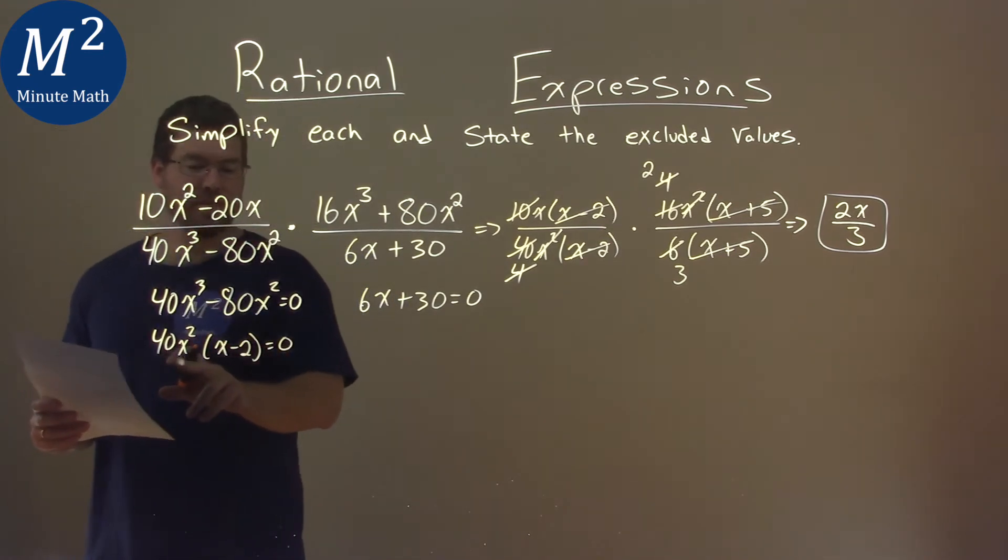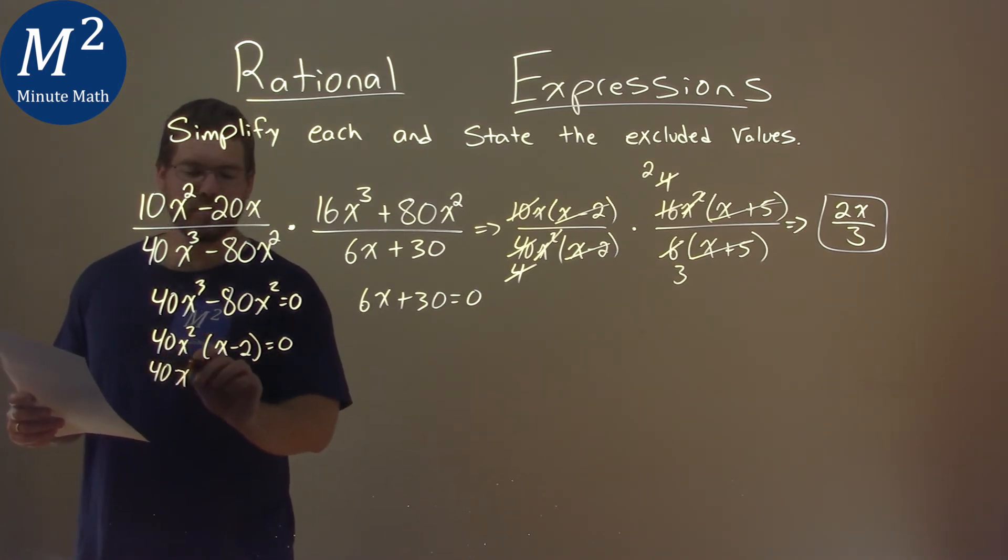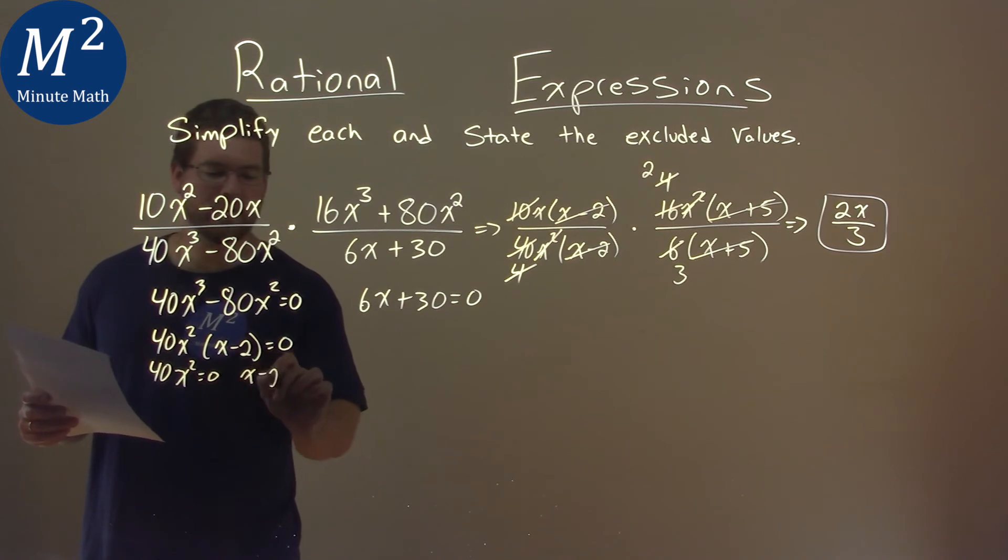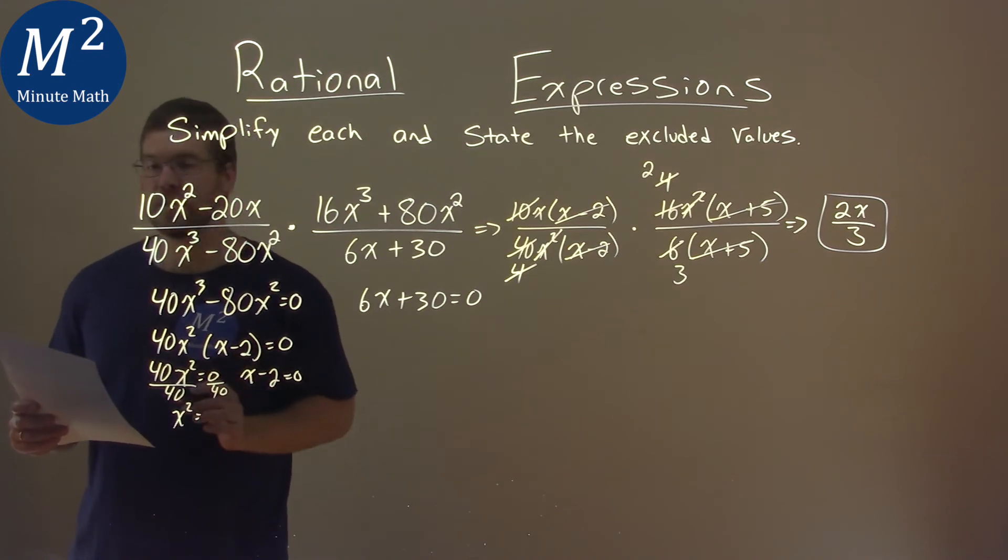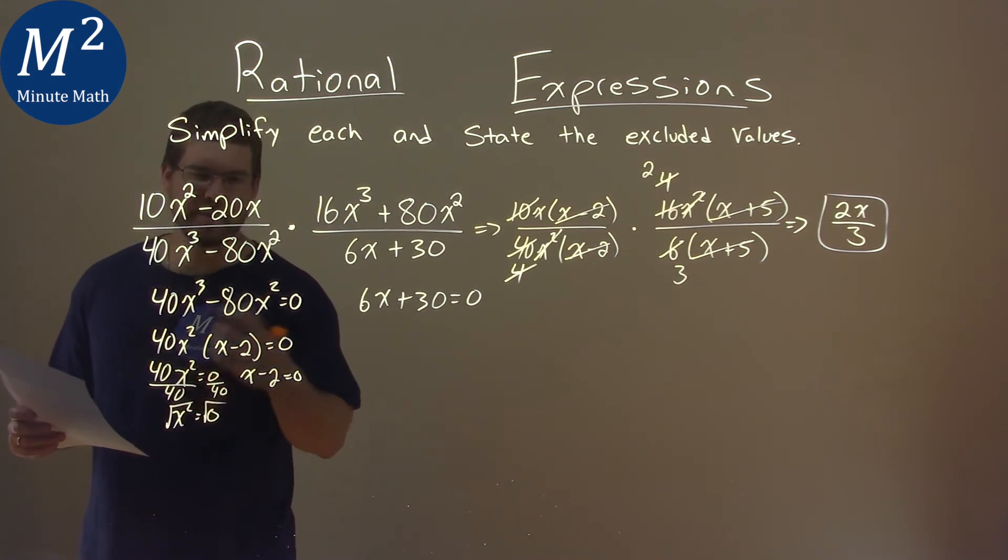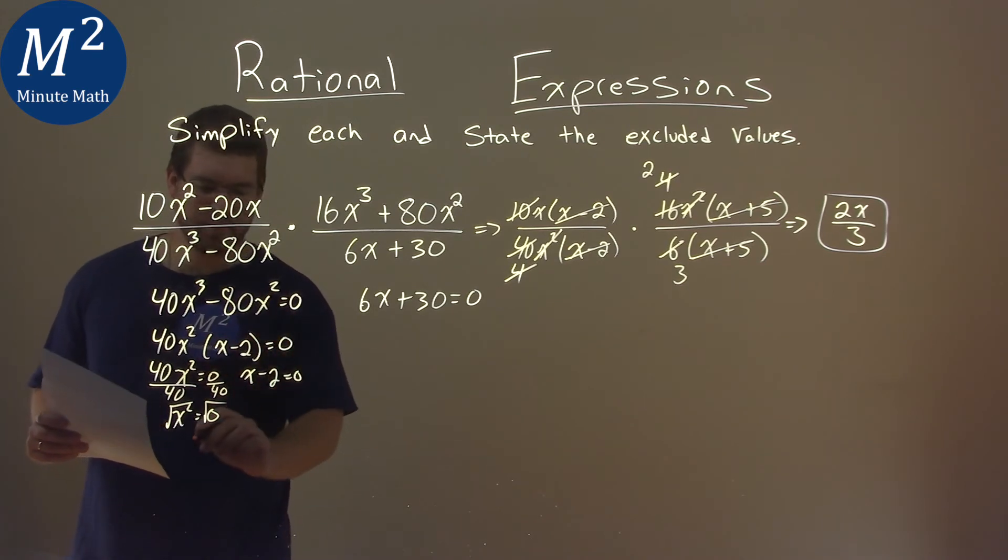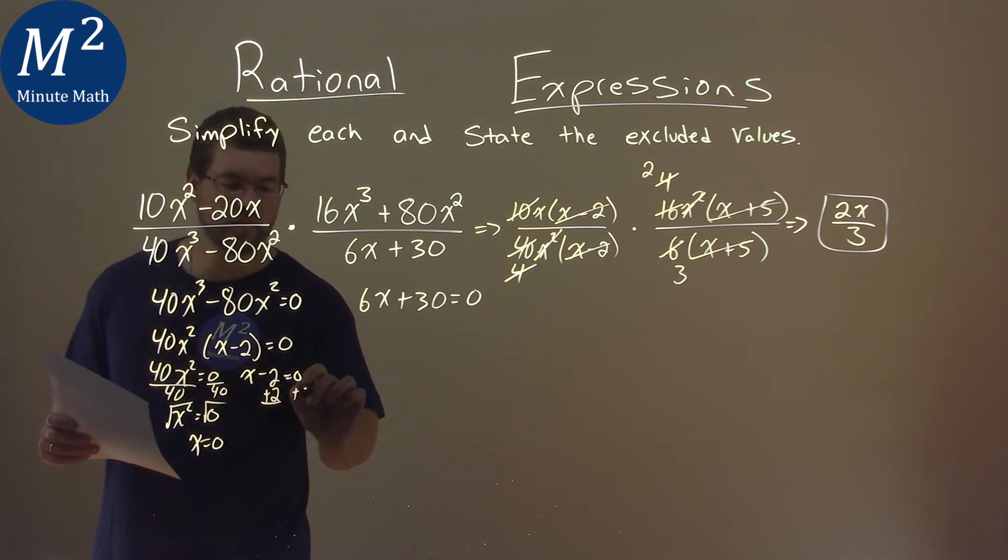Well, with that, we're going to set now both of these now equal to 0 to solve. So we have 40x squared equals 0, and x minus 2 equals 0. Divide both sides by 40 here, and we have x squared equals 0 over 40, which is 0. And we square root both sides, plus or minus 0 is the same, and so x equals 0. Here I added 2 to both sides, and we have x equals a positive 2.